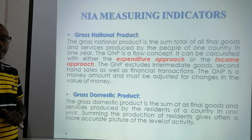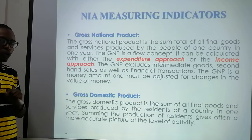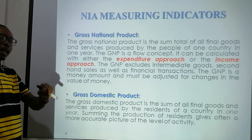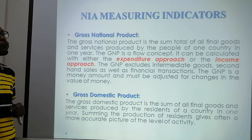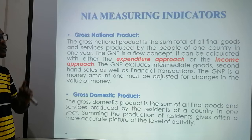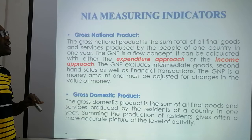Now let's see the indicators we can use to measure the national income. The measurements are all under the indicators. We have the gross national product. The gross national product is the sum total of all final goods and services produced by the people of one country in one year. The GNP is a flow concept and can be calculated with either the expenditure approach or the income approach.